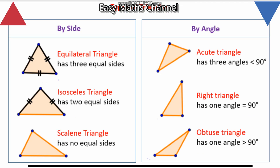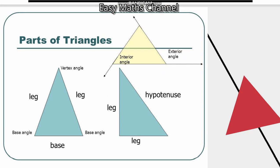The triangle has rules and properties. Equilateral triangle has three equal sides. Isosceles triangle has two equal sides. Scalene triangle has no equal sides. Acute angle triangle has three angles less than 90 degrees. Right angle triangle has one 90-degree angle and the other two are acute. Obtuse angle triangle has one angle greater than 90 degrees and less than 180 degrees.